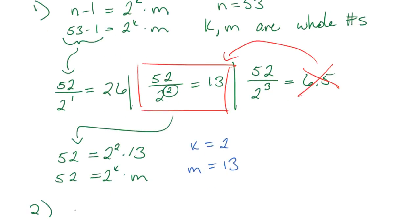So that is step 1. Step 2, I need to pick an a. So a needs to be greater than 1 but less than n minus 1. So in our case, a needs to be in between 2 and 51.